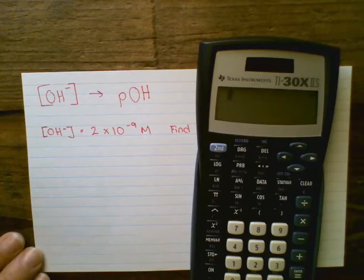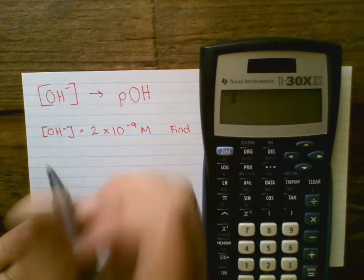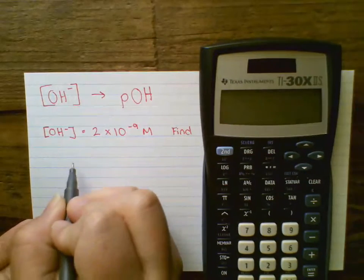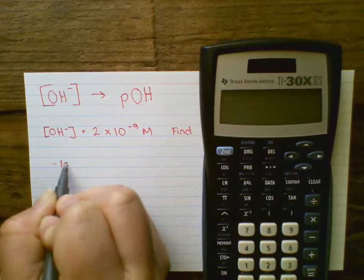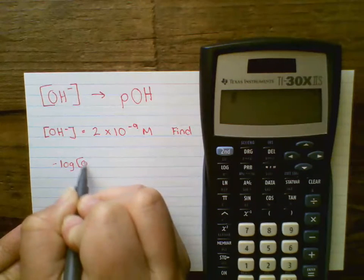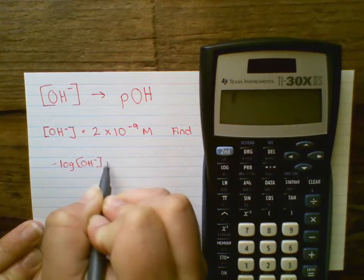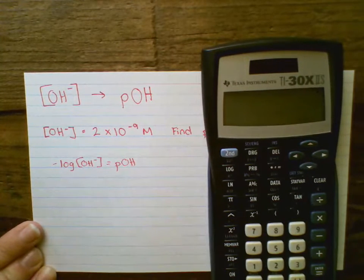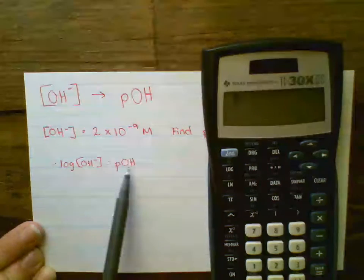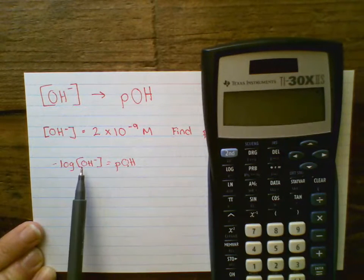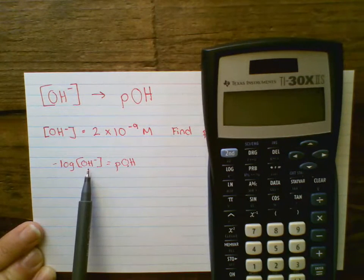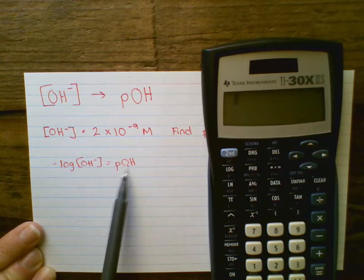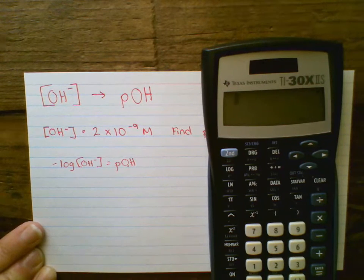If we look at this calculation, it's still the same formula. We're going to use the negative log of our OH- concentration to give us our pOH. If you get confused, just remember to match up. If we're looking for a pOH, we're going to use our OH- concentration. If you're looking for a pH, you're going to use your H+ concentration.